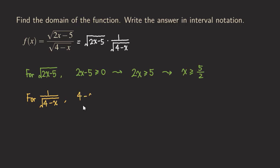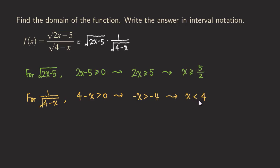So instead of the usual 4 minus x ≥ 0, we only require 4 minus x > 0. That's the difference between the two. We then solve this inequality: subtracting 4 from both sides gives negative x > negative 4, and dividing both sides by negative 1 — and switching the inequality symbol since we're dividing by a negative number — gives us x < 4.